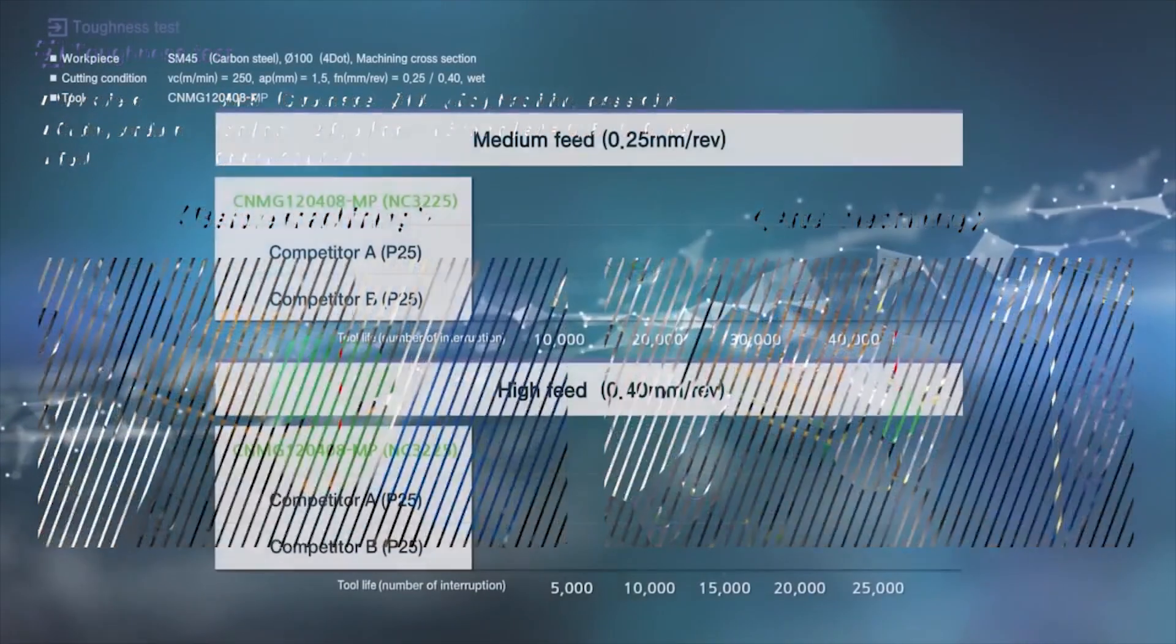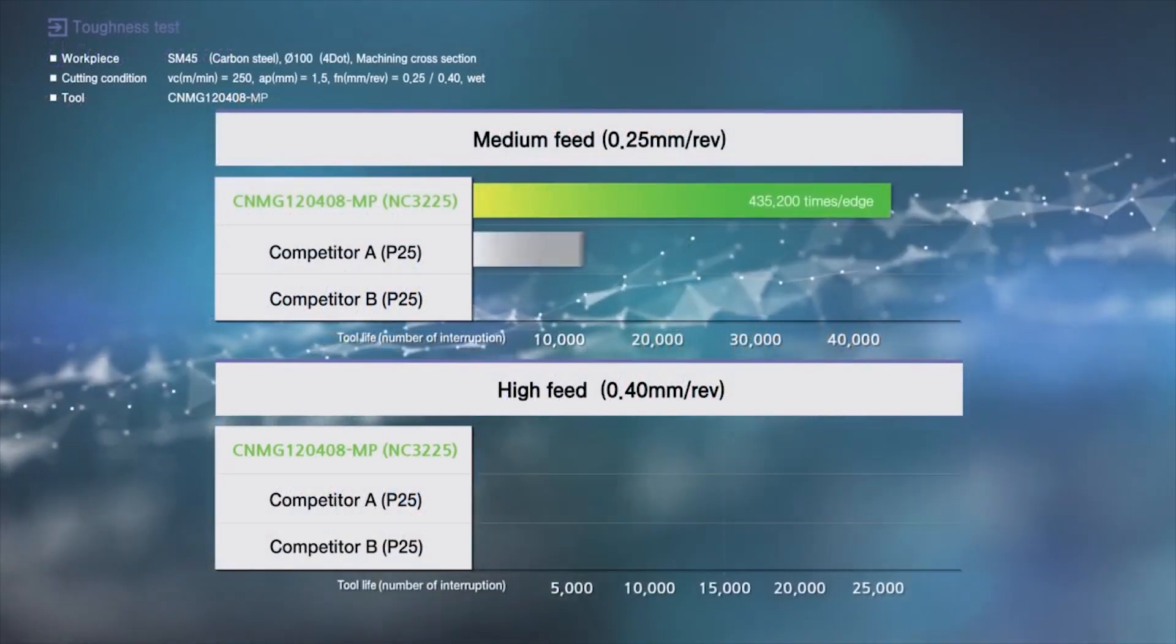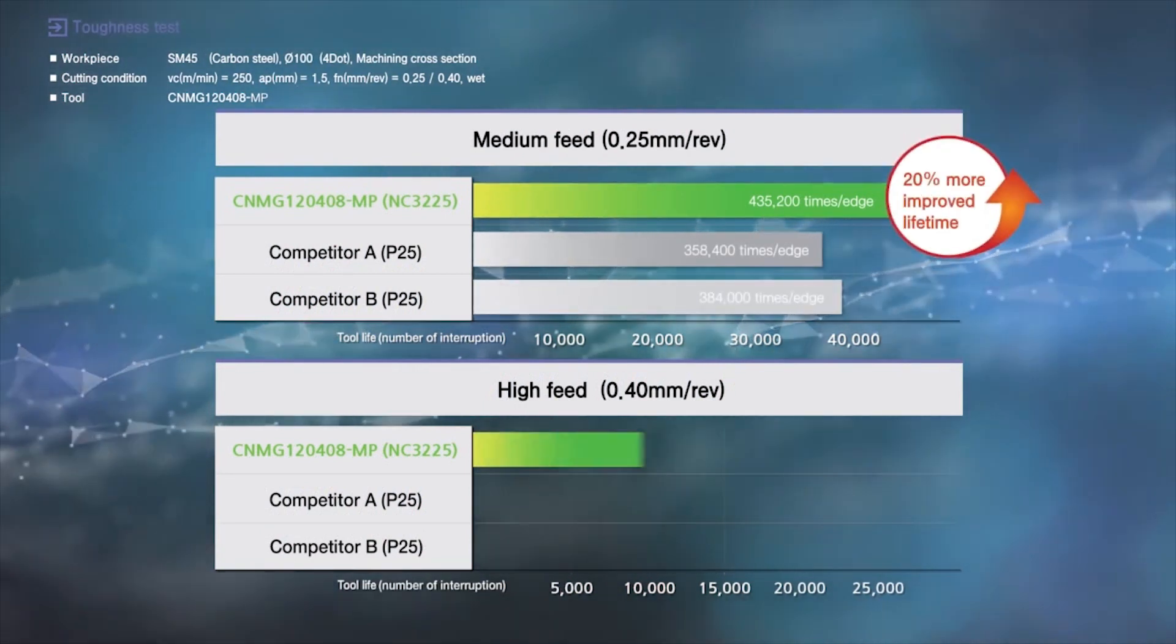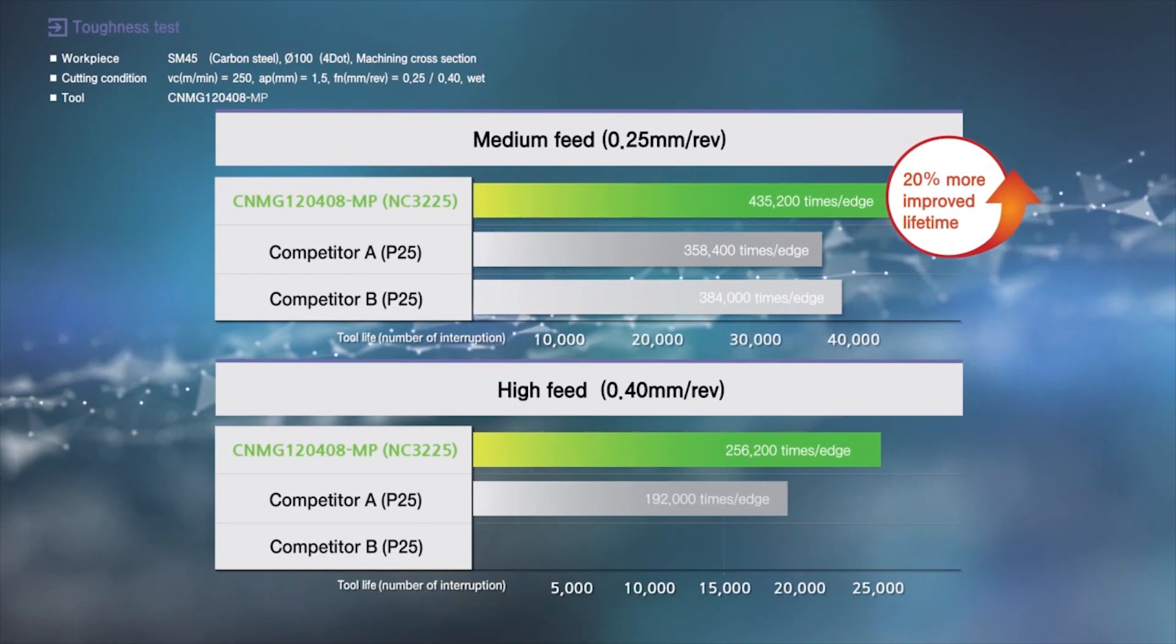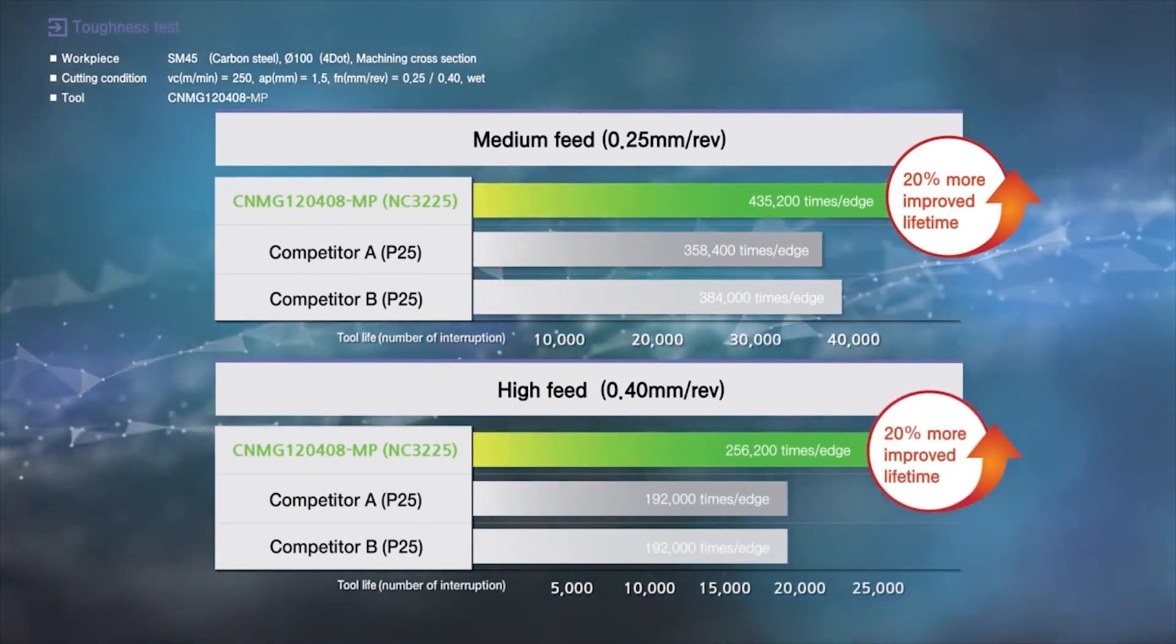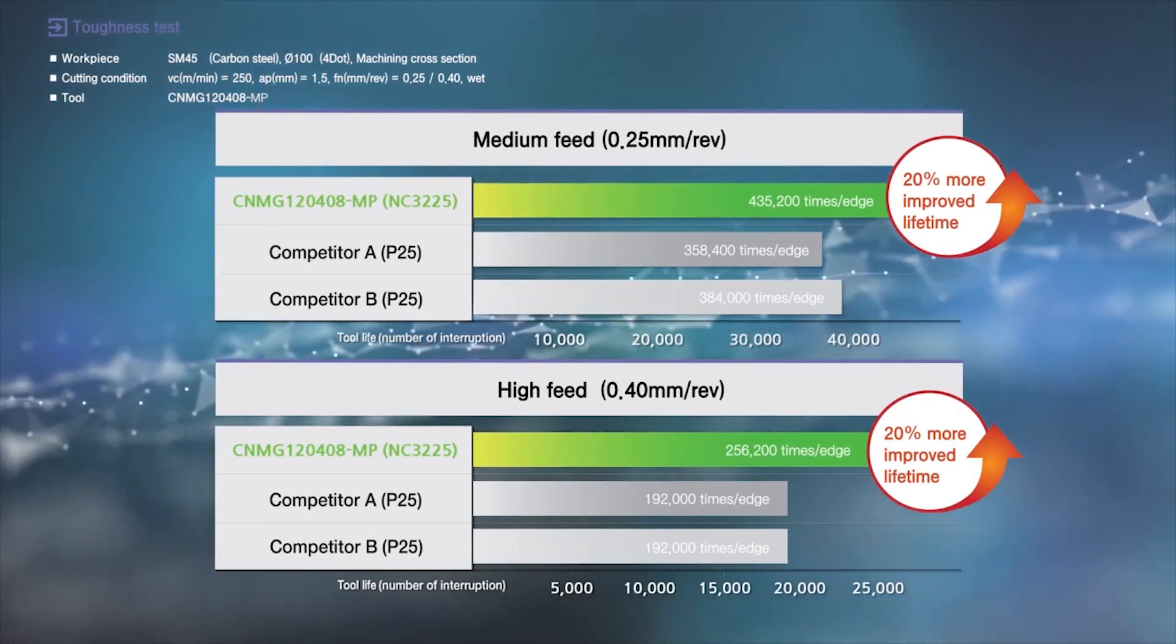NC3225 and 3215 with new MP-LP chip breakers. The LP QuadDot chip breaker enables stable productivity with efficient chip evacuation using QuadDot system and multi-feed rates.